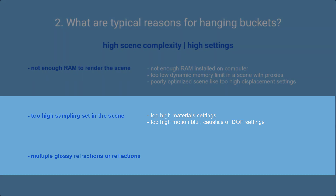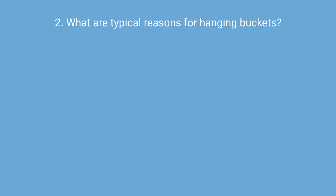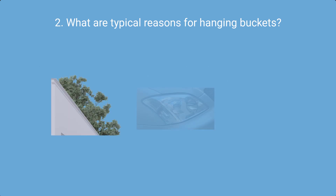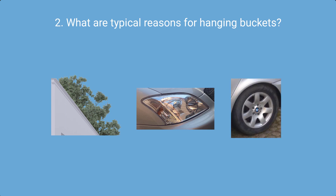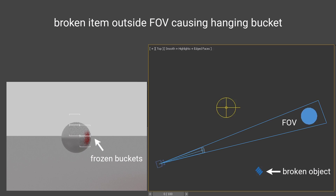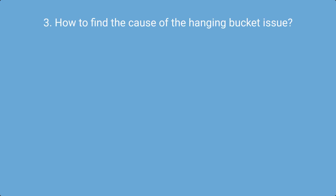The combination of high sampling and reflection loops is the most common cause of hanging buckets. It's often caused by areas of trees or car lights with lots of glossy reflections and refractions, or complex glossy elements like car bumpers or alloy wheels. It's also worth noting that a hanging bucket can be triggered by a problem outside the field of view, being reflected into the frozen bucket's area.